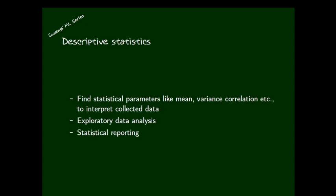Once we have the sample, the next step is to process the data and draw valid conclusions. This procedure contains two parts: descriptive statistics and inferential statistics. In descriptive statistics, the usual technique is to find statistical parameters like mean, variance, correlation, etc. to interpret the collected data. Then we apply exploratory data analysis — EDA — where we create plots and make suggestions and conclusions based on them.